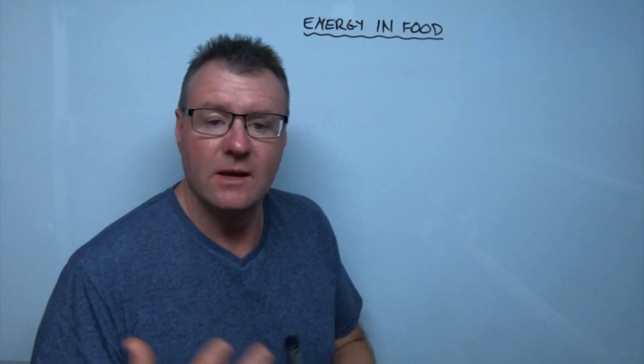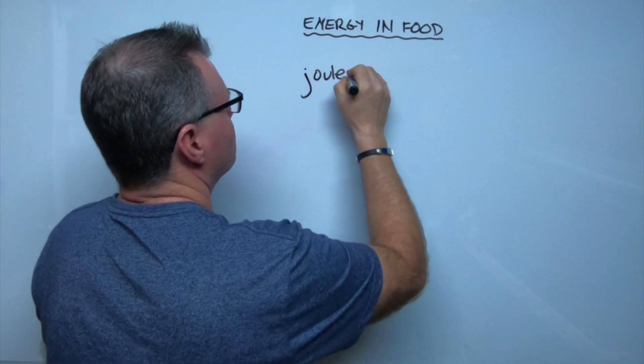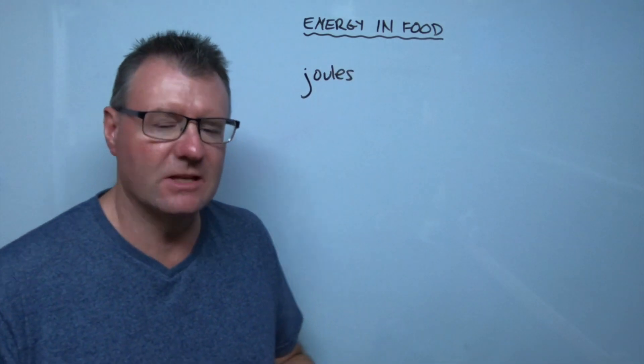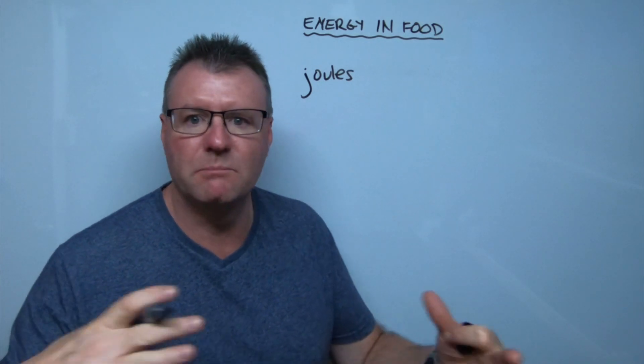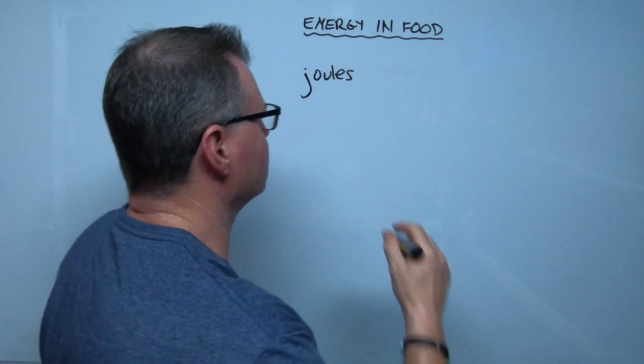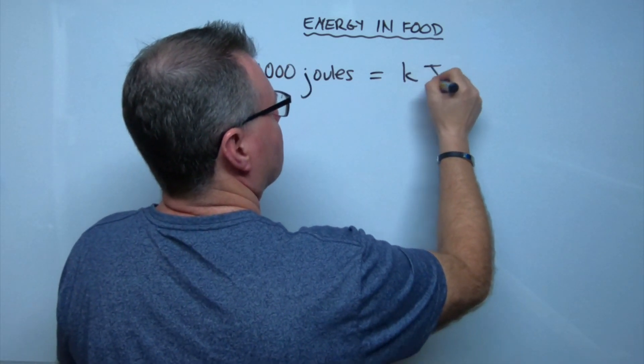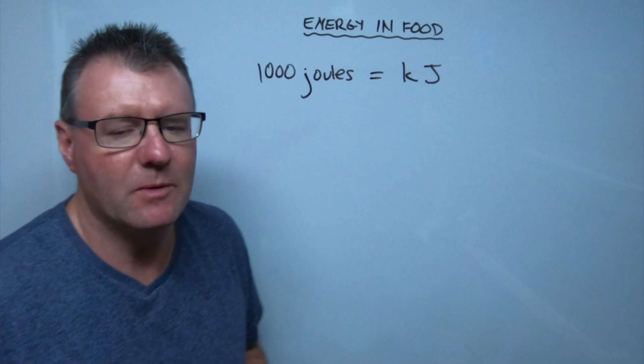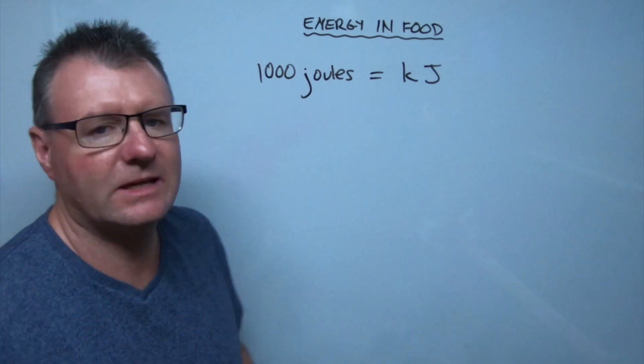In terms of food, the unit that we use is joules. It's a measure of energy, but it's kind of really small, so we work in big clumps. In fact, we work in groups of a thousand. So 1,000 joules equals a kilojoule. And when we're talking about energy in food, usually we record it in units of kilojoules.